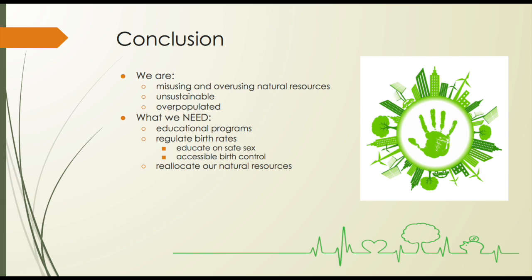Natural resources are being misused, overused, and have already begun to deplete in developing countries. The disparity in our use of resources has caused us to create an unsustainable planet. However, we still have time to instill change and make our planet a sustainable place for us and future generations. Implementing programs that educate on safe sex and making birth control accessible would help regulate birth rates. Establishing government policies that regulate the allocation of natural resources and making them more available in developing countries would also be a step towards a more sustainable planet.